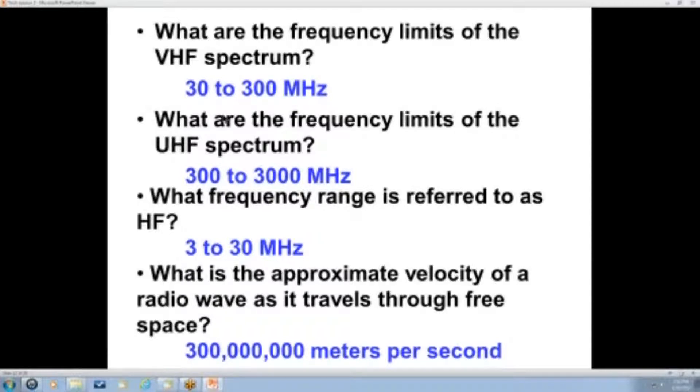What are the frequency limits of the UHF spectrum? It's from 300 to 3,000 megahertz. Notice that these are 10 times these. Each of these groups of frequencies is 10 times the frequency range of the previous one. What frequency range is referred to as HF or high frequency? It's from 3 to 30 megahertz. The V here is very high frequency. The U is ultra high frequency. And the HF is just high frequency.